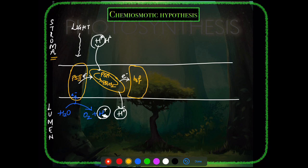To summarize so far in the chemiosmotic context: PS2 absorbs light, electron excited toward Plastoquinone. Water photolysis gives electron back to PS2. Plastoquinone, acting as a hydrogen carrier, pulls protons from the stroma and deposits them in the lumen. Electron is then passed to the cytochrome complex.